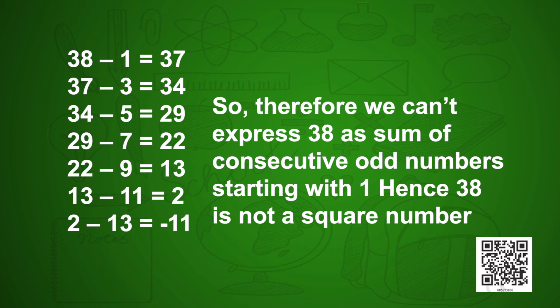Let us check the number 38. Subtracting successive odd numbers: 38−1=37, 37−3=34, 34−5=29, and so on. At the end, subtracting 11 gives 2, and subtracting 13 from 2 gives −11 — a negative number. So we cannot express 38 as a sum of consecutive odd numbers starting with 1. Therefore, 38 is not a square number.